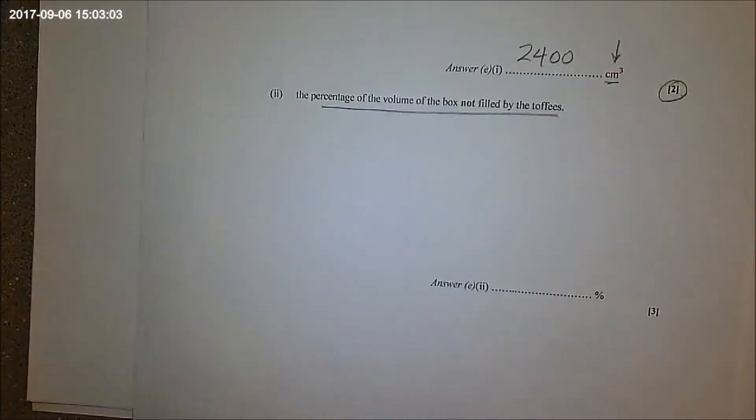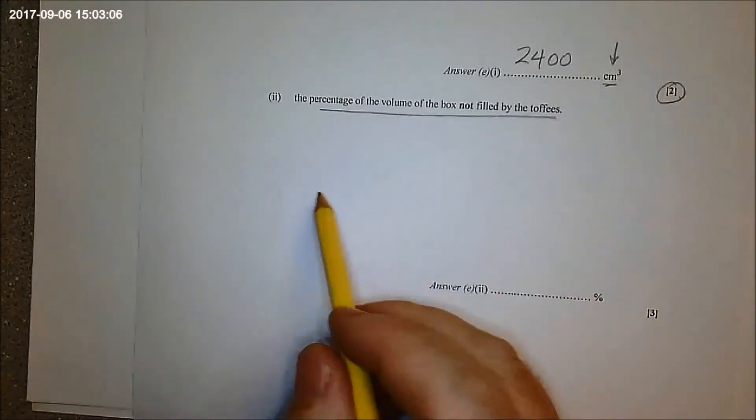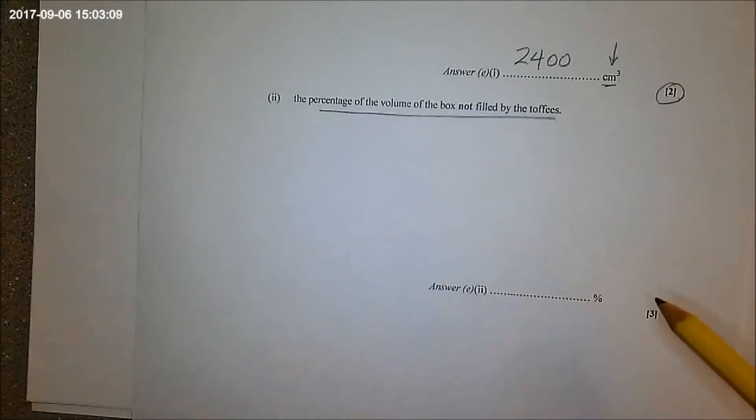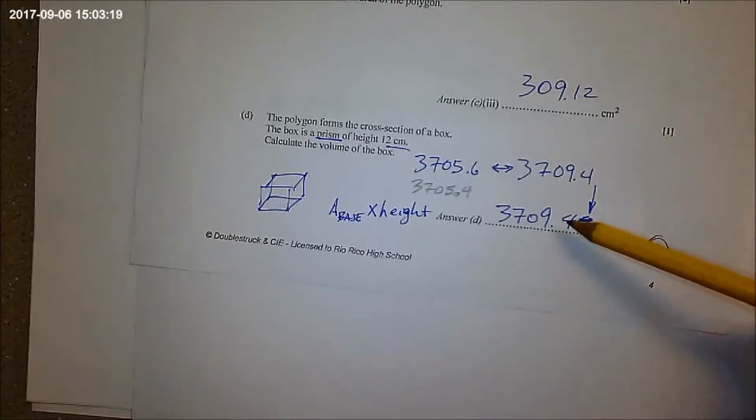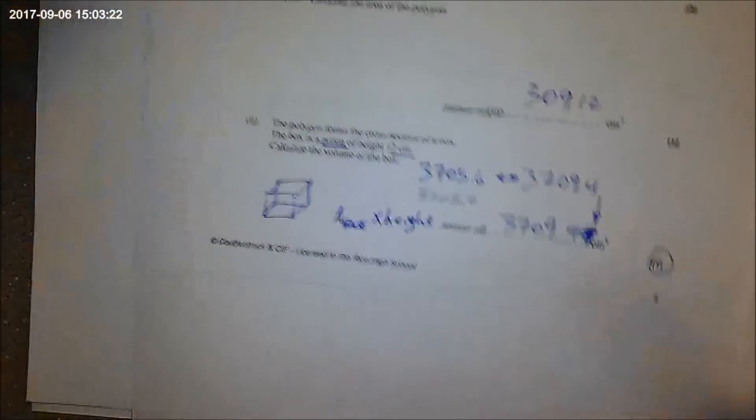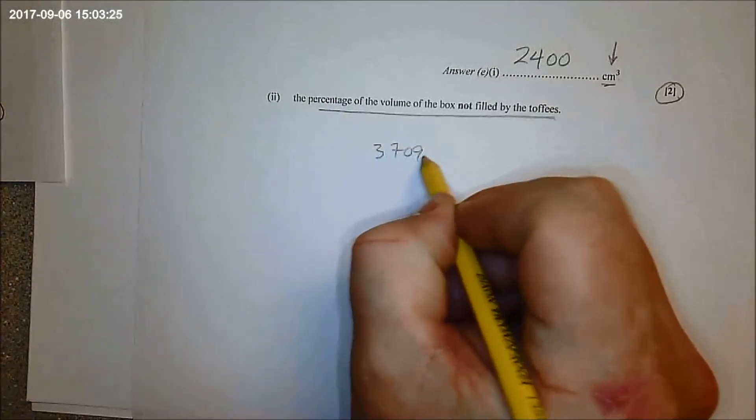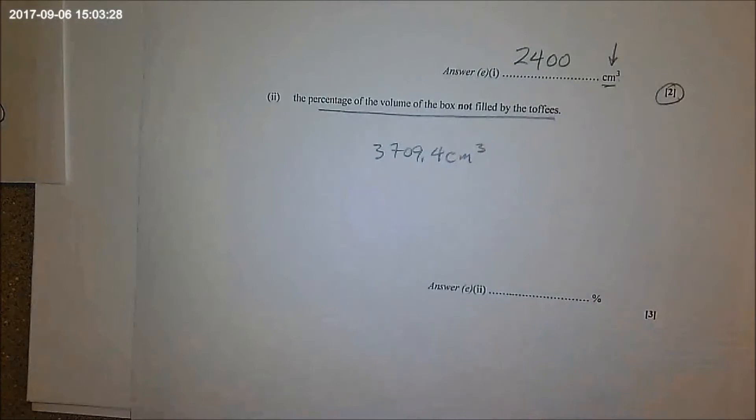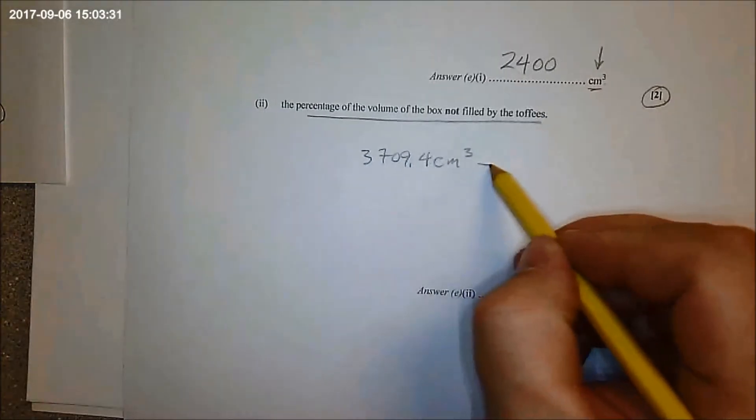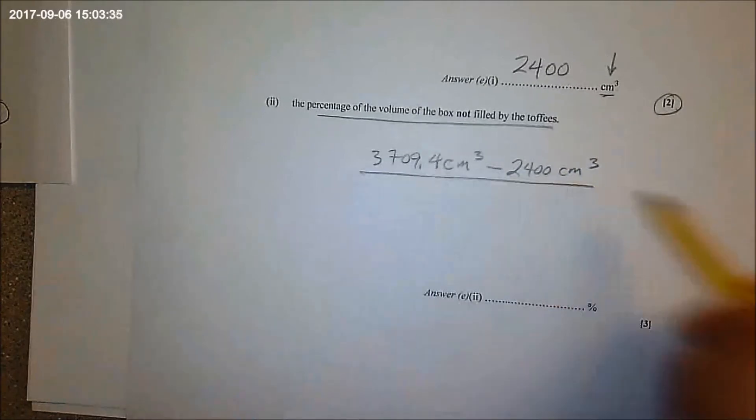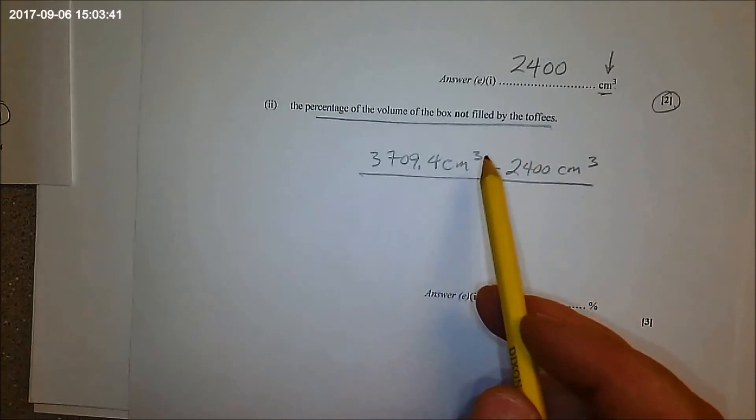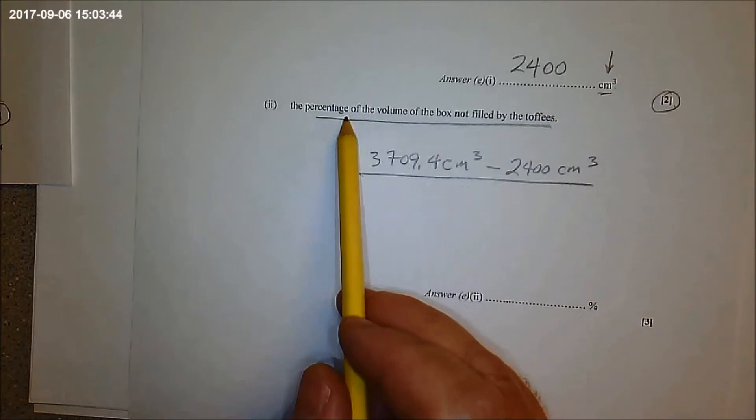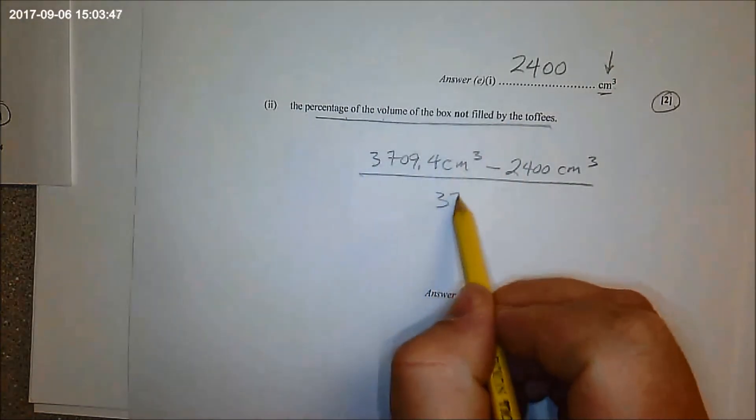Now, percentage of the volume of the box not filled. Now some people in here they wrote a paragraph, it looked like a five-page excerpt from War and Peace explaining why there was not enough information, which is silly because they give you the volume of the box, you have the volume of the box from this part. And the volume of the toffees is that. So if you subtract the two that would tell you the volume that's not filled up by the toffees right? And you have to figure out the percentage of the box not filled by toffee.